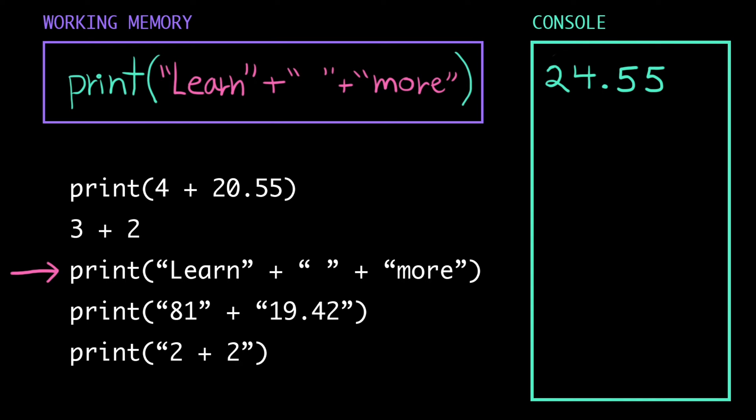Third line. The computer loads print, the string learn, plus the string space - careful, this is not the empty string, there's one little space character in between these quotation marks - plus the string more. But there are two operators in this expression, there's two plus signs. So the computer's actually going to evaluate this expression in two steps, reading left to right.